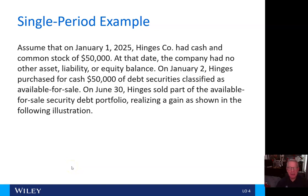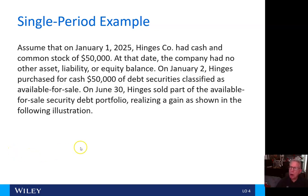Hi everybody and welcome back to video number seven in chapter 16. When we left off we were looking at a single period example, and here we're going to assume that on January 1, 2025, Hinges Company had cash and common stock of $50,000.